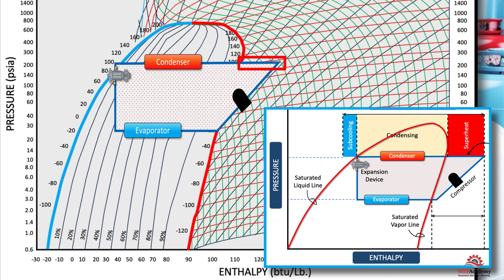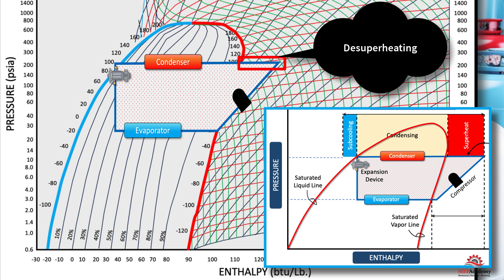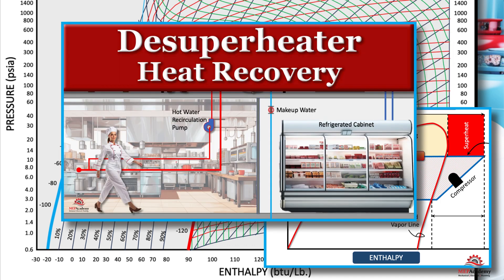This small section beyond the saturated vapor line is where desuperheating takes place. This runs from the compressor discharge until it intersects the saturated vapor line, and from there it remains at a constant temperature. See our video on desuperheating.